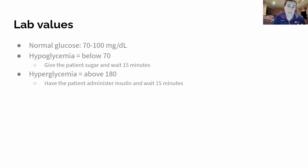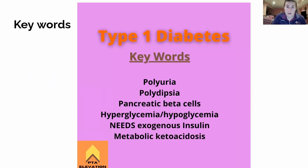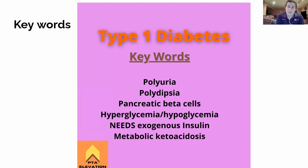Keywords — when it comes to type 1 diabetes: polyuria, meaning they're urinating a lot; polydipsia, which is excessive thirst. As I was saying with my cousin, she was drinking all that water in a short period of time and still felt thirsty.